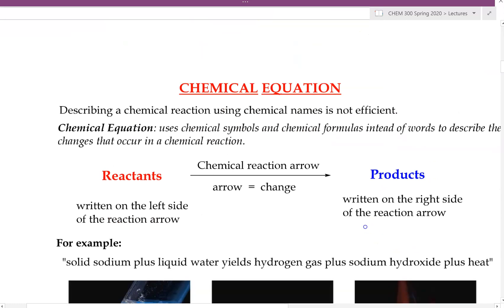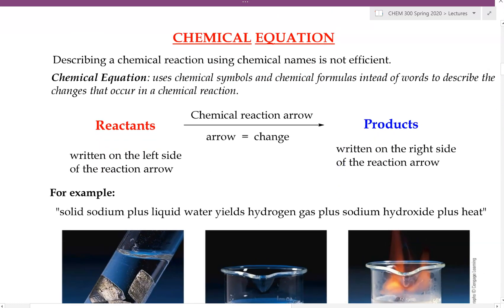Now let's go over chemical equations. As a chemical reaction is happening, describing it using only names is not the most efficient way, because it is packed with so much information that it becomes very difficult to figure out what's going on. So in science, we do not just describe a chemical reaction using words — we also write the chemical equation. This is basically a picture that allows us to see a whole lot of detail of what is happening in a chemical reaction.